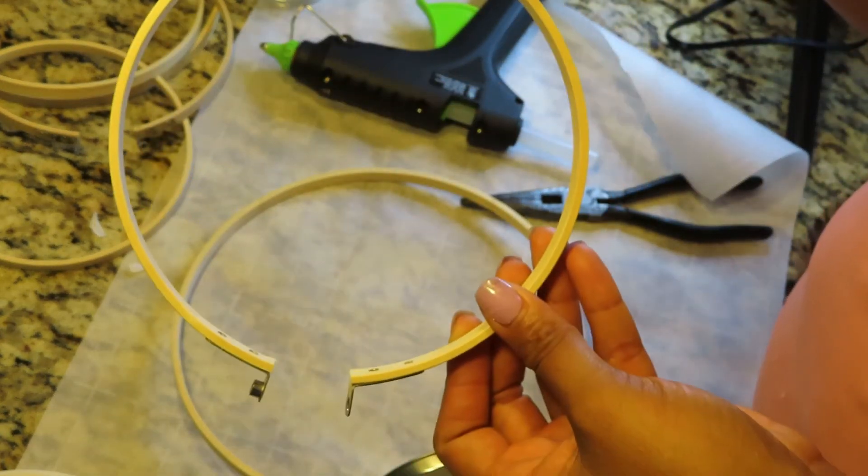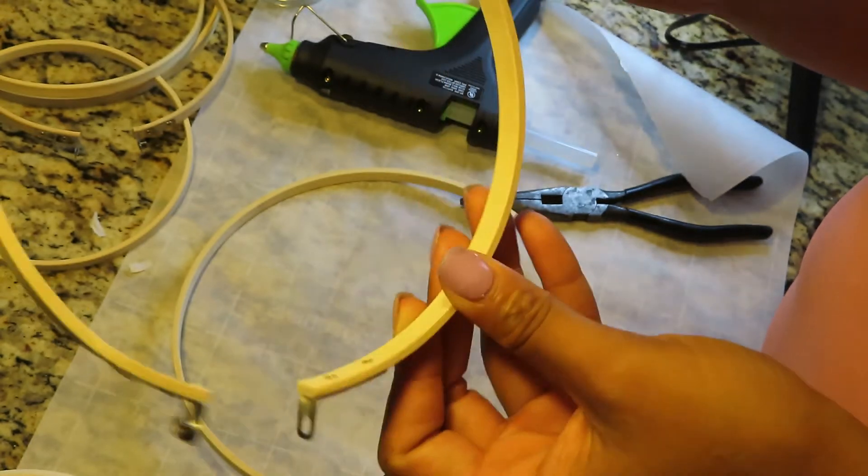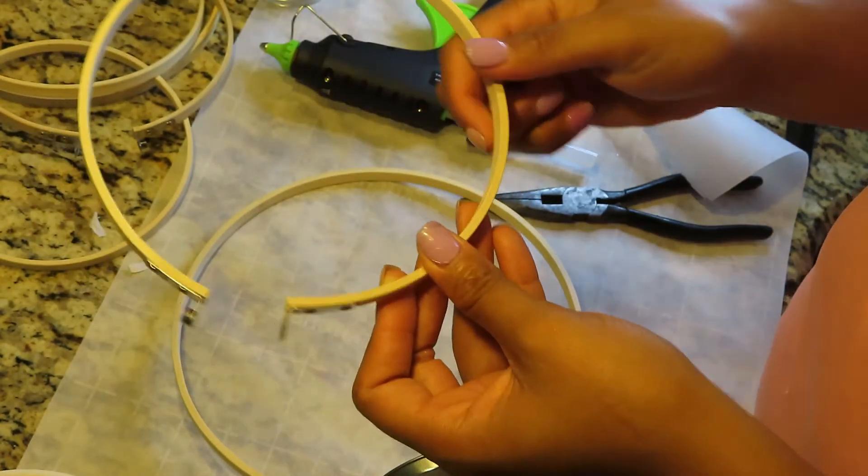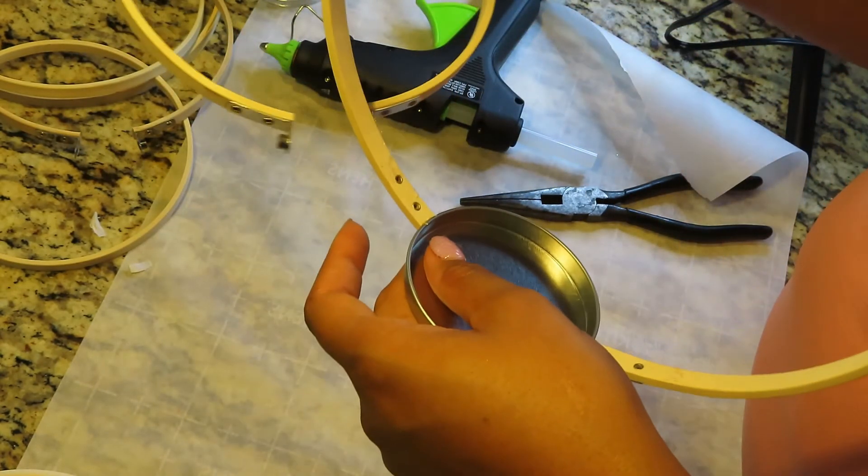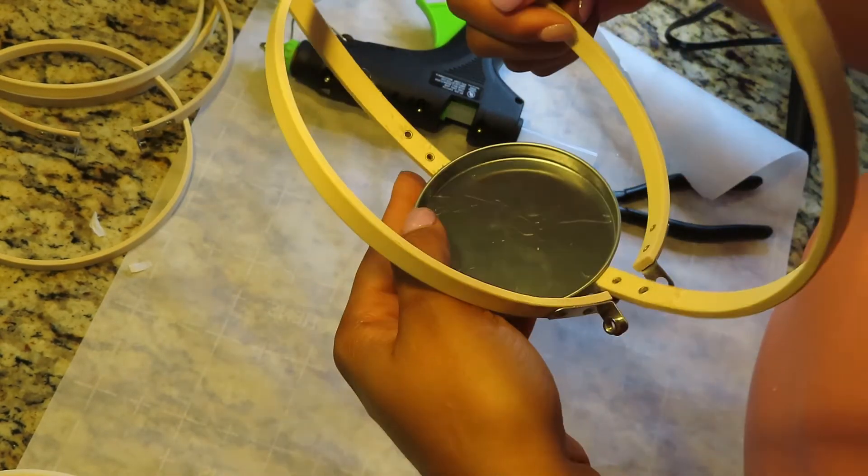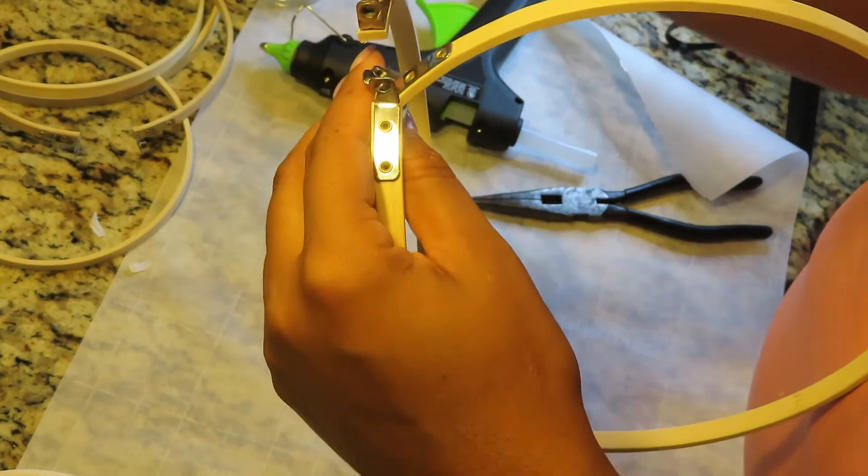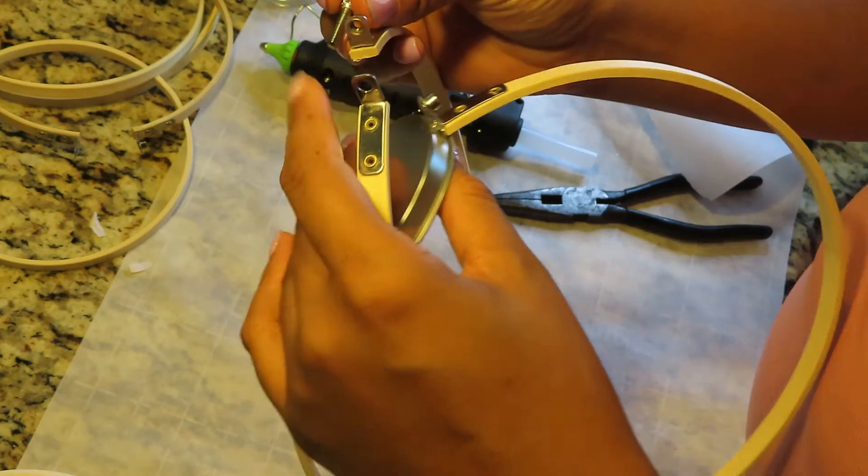With that same embroidery hoop and tin, I'm gonna place another embroidery hoop, a smaller size, and connect it also within that circle. I took the metal clasp, once I placed it and interlocked it, I took the metal clasp and put it back together.